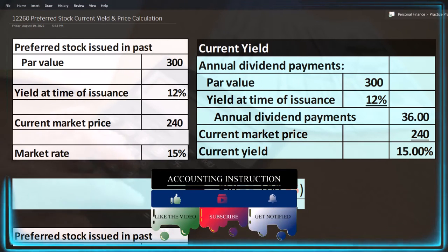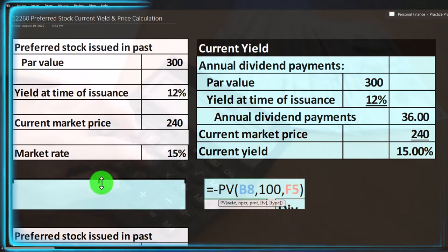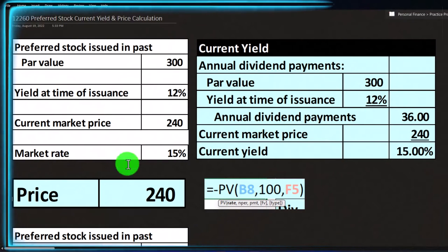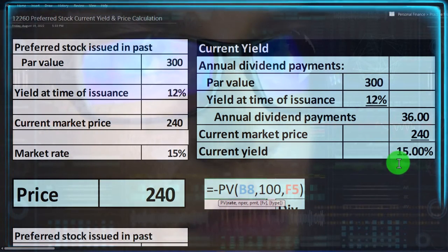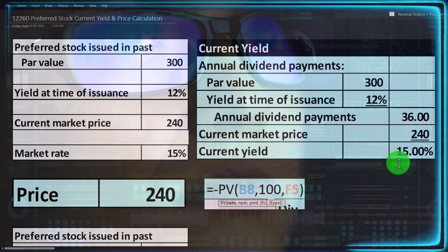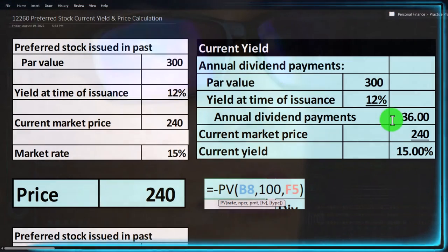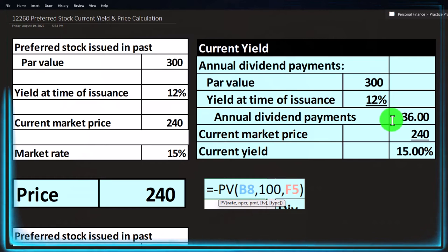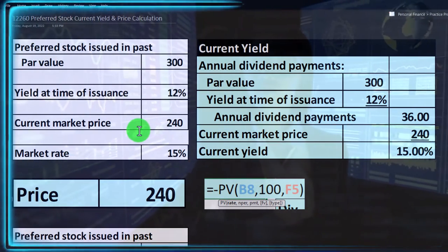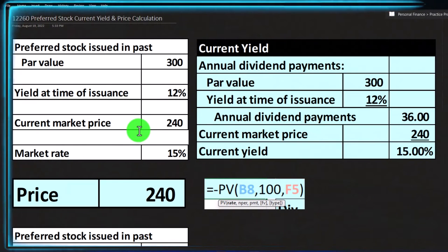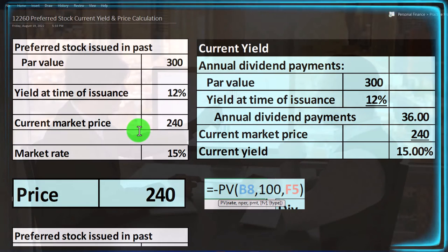The yield is calculated on a yearly basis and can be used to compare to other similar investments. To calculate the price, assuming the current market yield is 15% and the annual dividend is $36, we use present value of future payments — similar to bonds. Remember, bonds have two cash flow streams: the series of interest payments and the present value of the maturity amount.